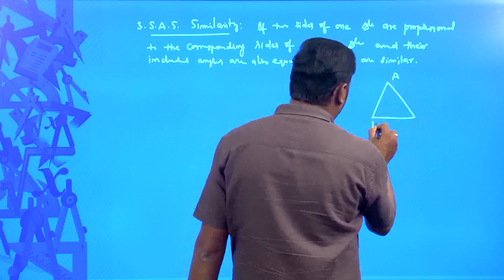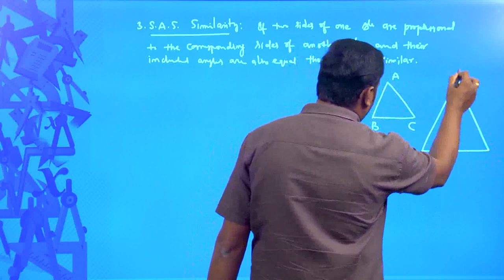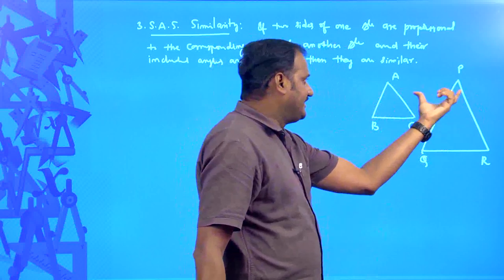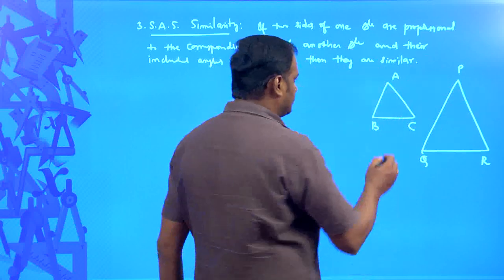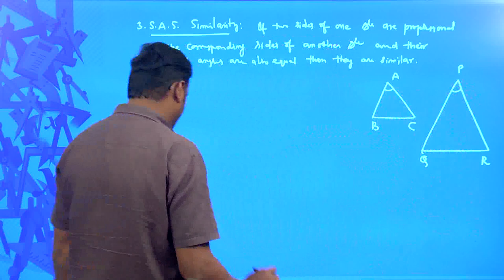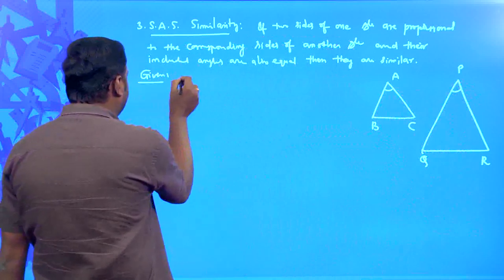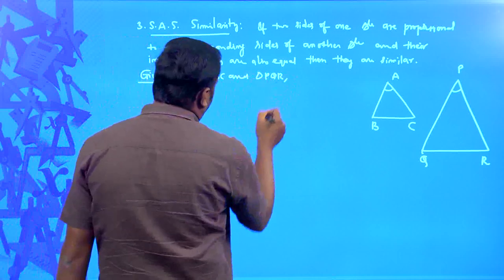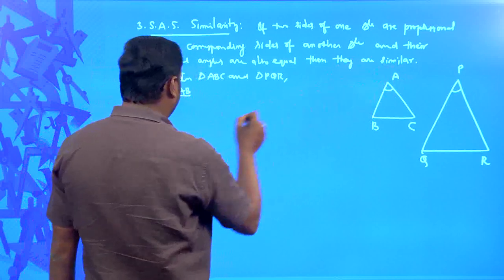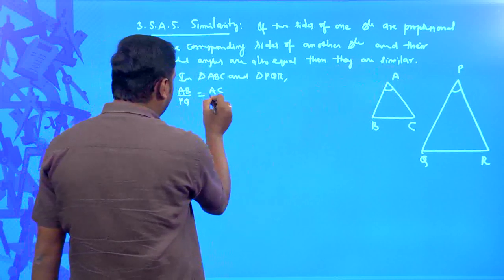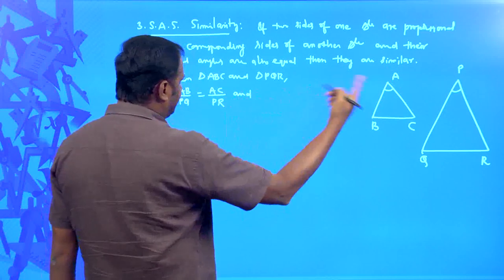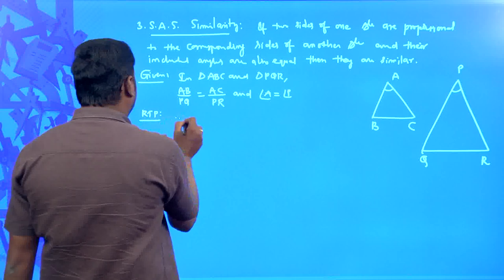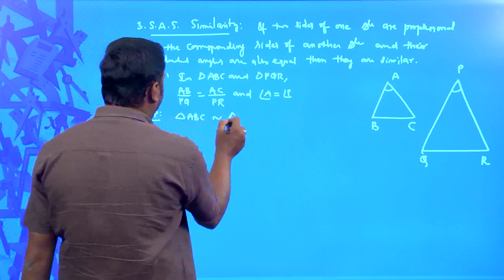I am taking two triangles: triangle ABC and triangle PQR. In these two triangles, the first side is proportional to the first side, the second side is proportional to the second side, and their included angles are equal — that is, angle A is equal to angle P. So, given that in triangle ABC and triangle PQR: AB/PQ = AC/PR and angle A = angle P. We need to prove triangle ABC is similar to triangle PQR.